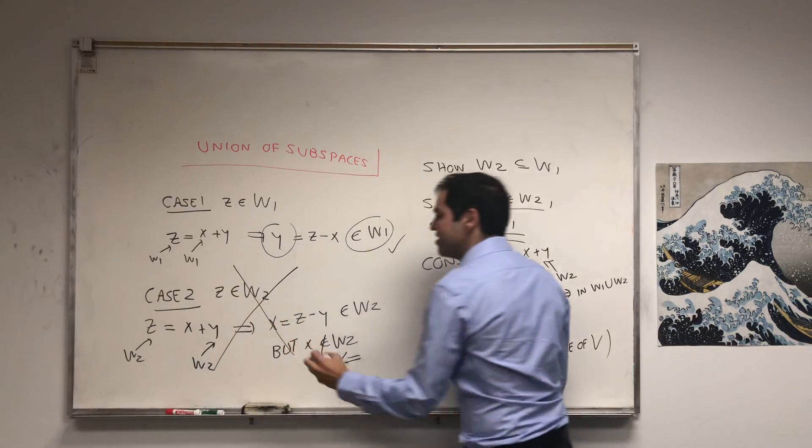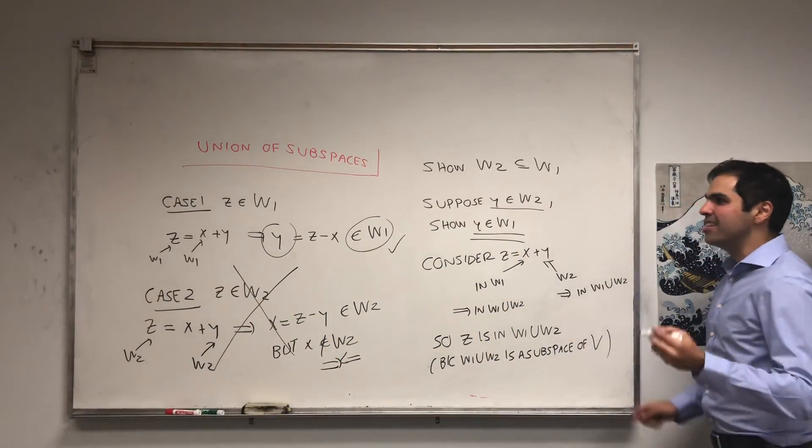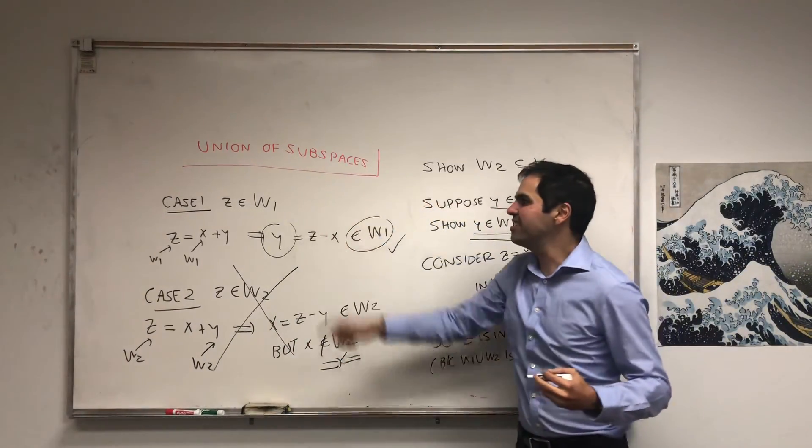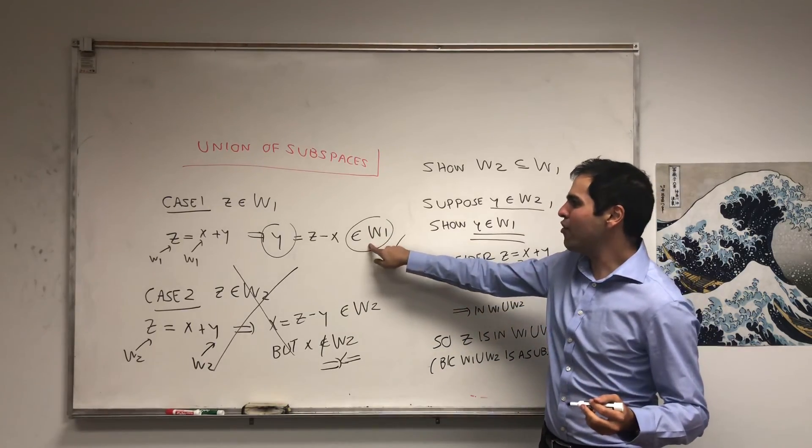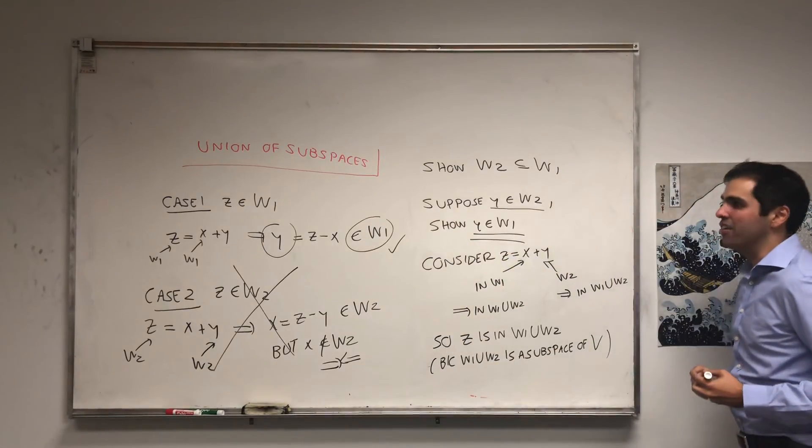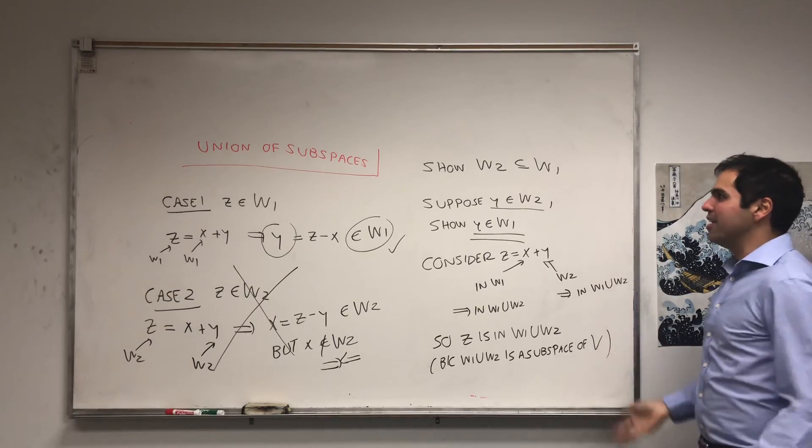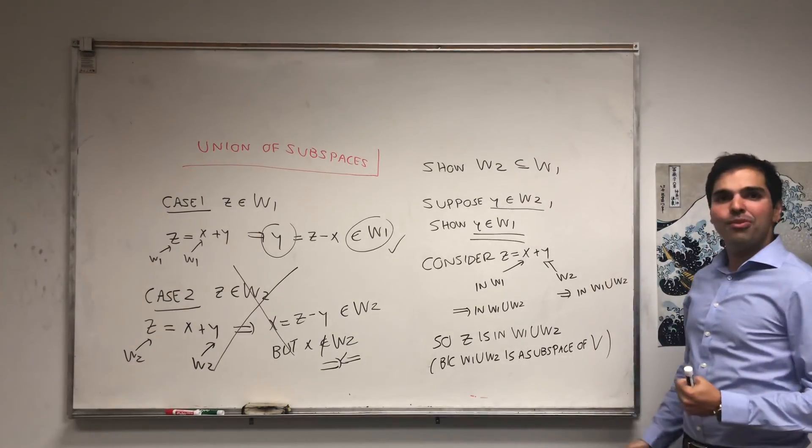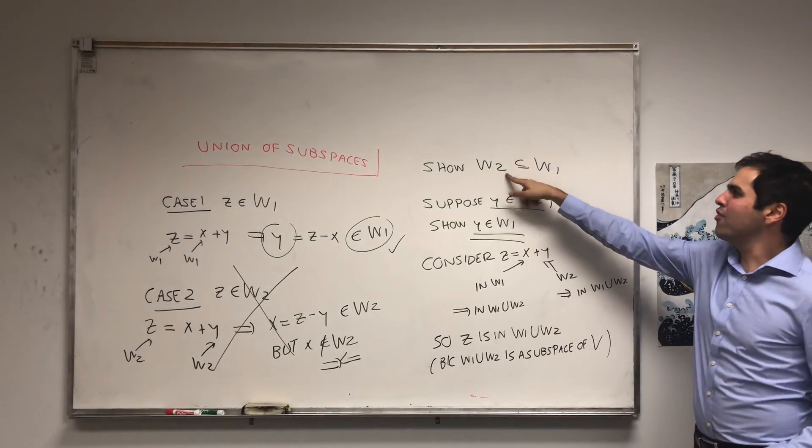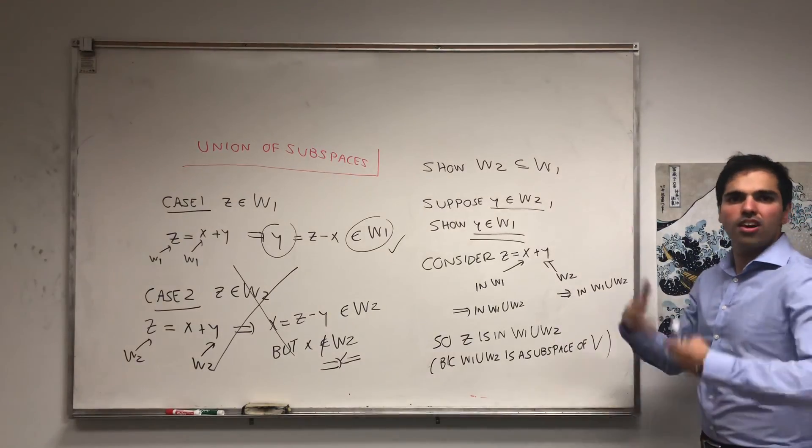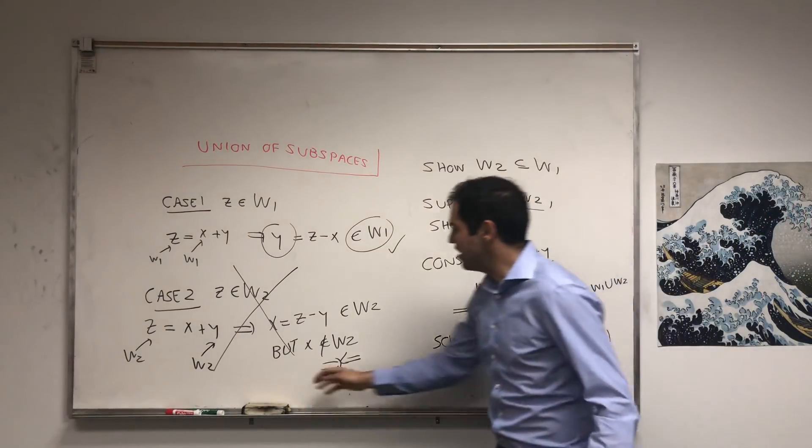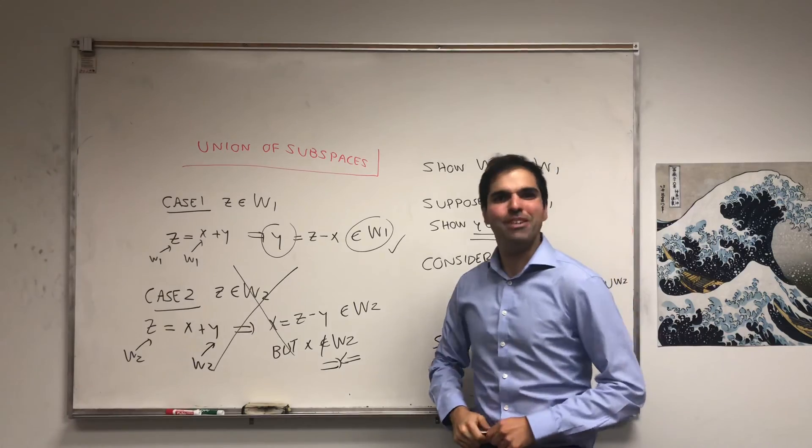What does that say? It says, basically, that this case can never happen. So, we must have that z is in W1. And therefore, we must have the stuff we showed, that y is in W1. And that's exactly what we wanted to show. Therefore, W2 is included in W1. And we are done. And we can go home very happy.